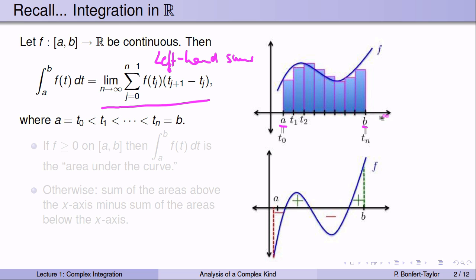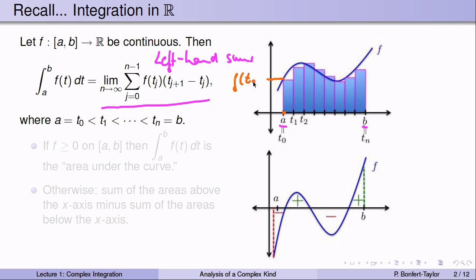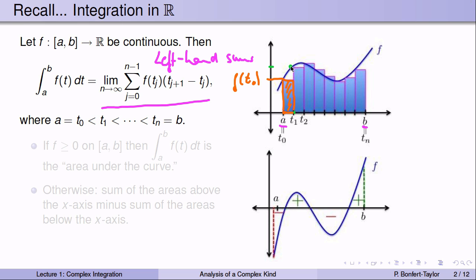We divide the interval into n chunks and evaluate f at the left-hand point of each sub-interval. For example, f(t_0) is a value we multiply by t_1 minus t_0 — that length — giving the area of a small rectangle. Similarly, f(t_1) multiplied by t_2 minus t_1 gives the area of the next rectangle. By summing all these products, we add up the areas of all these rectangles.